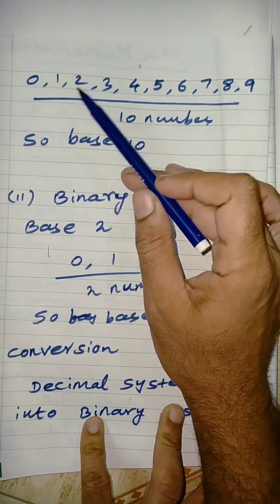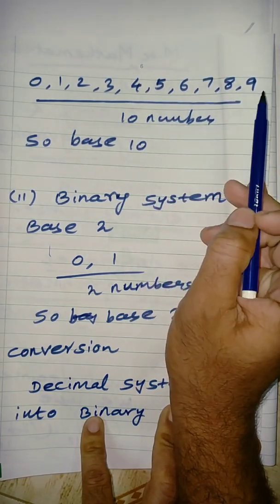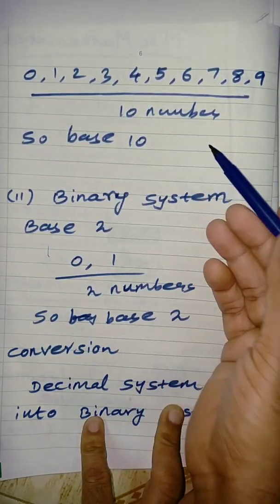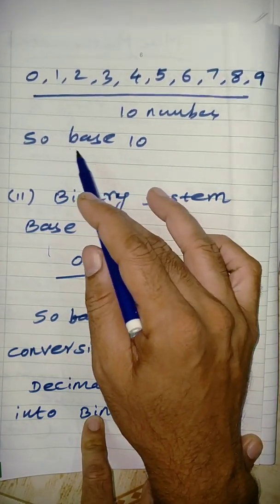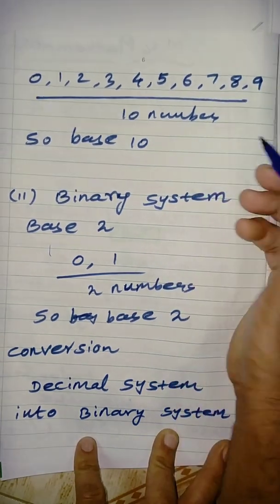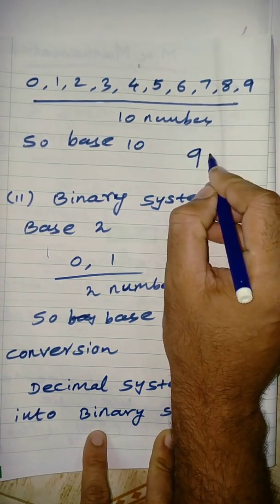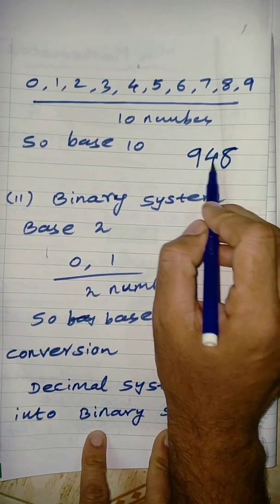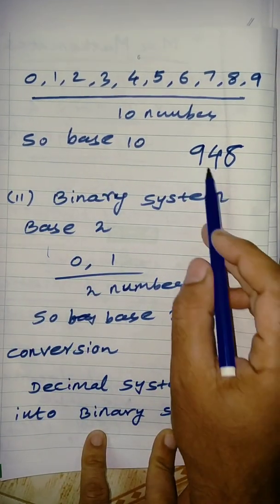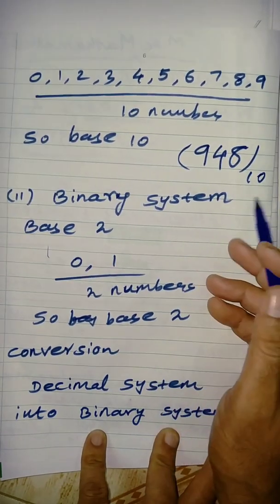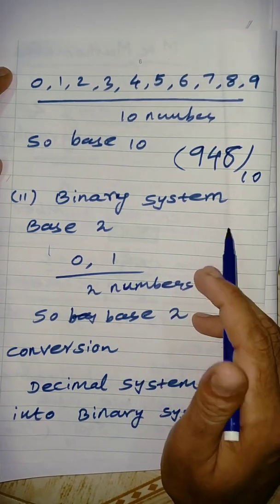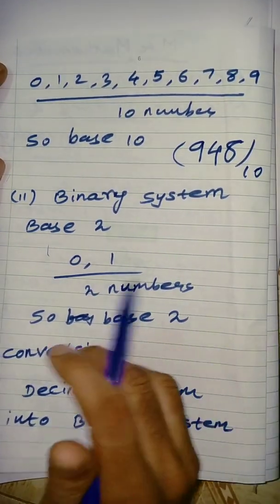Just recall base 10: the digits are 0, 1, 2, 3, 4, 5, 6, 7, 8, 9 — a count of 10. That is why the base 10 number system is created. For example, taking the number 948, this is a base 10 number. That is how the base 10 system is created.